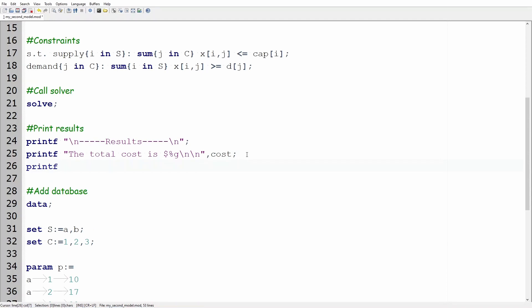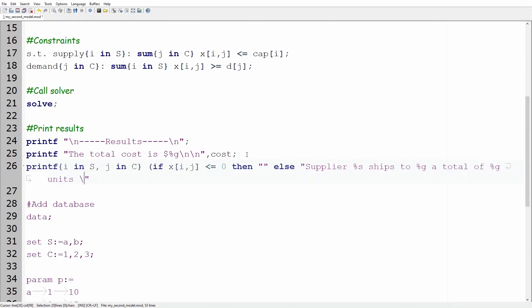Type printf keys i in s comma j in c keys. Now this is the part when we add the if statement to inform that only values greater than zero must be printed. Write parenthesis if x brackets i comma j brackets less than or equal zero then two quotation marks. These marks are empty because nothing will be printed if the value is zero. Following, type else quotation mark supplier %s ships to %g a total of %g units backslash n and close parenthesis. Continue typing comma i j xij semicolon.